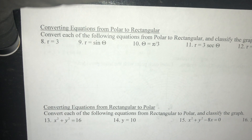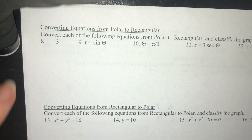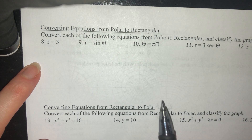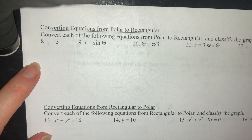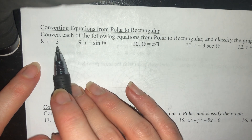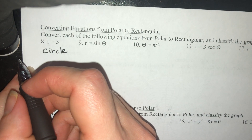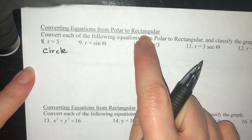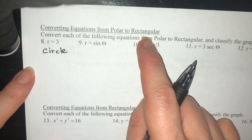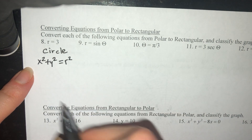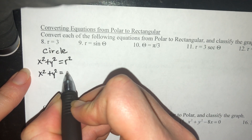Converting equations from polar to rectangular. Starting with r = 3: since r can be any angle, this generates a full circle. Using r² = x² + y², we get x² + y² = 9. That's a circle centered at the origin with radius 3.